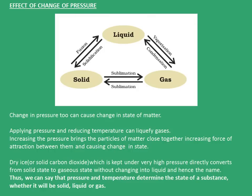Now, the effect of change of pressure. We had earlier seen the effect of temperature on states of matter. Change in pressure too can change the state of matter. Applying pressure and reducing temperature can liquefy gases. Increasing the pressure brings the particles of matter close together, increasing the force of attraction and causing a change in state. Solid carbon dioxide, also known as dry ice, kept under very high pressure, directly converts from solid state to gaseous state without changing into liquid — and hence the name. Thus, pressure and temperature together determine the state of a substance — whether it will be solid, liquid, or gas.